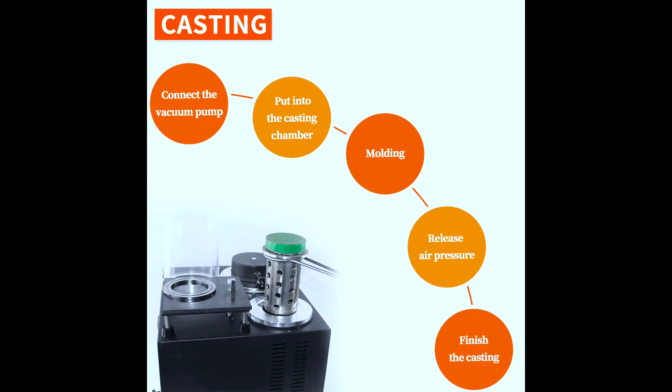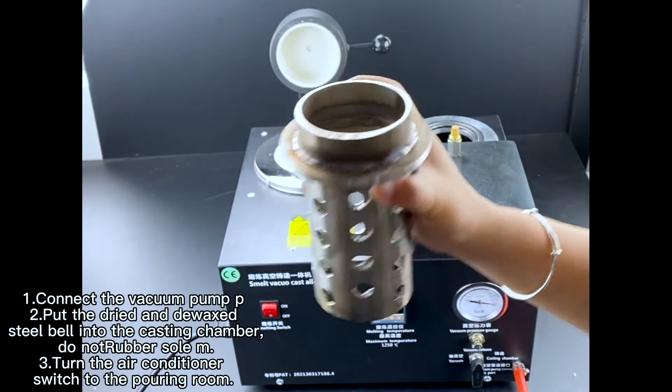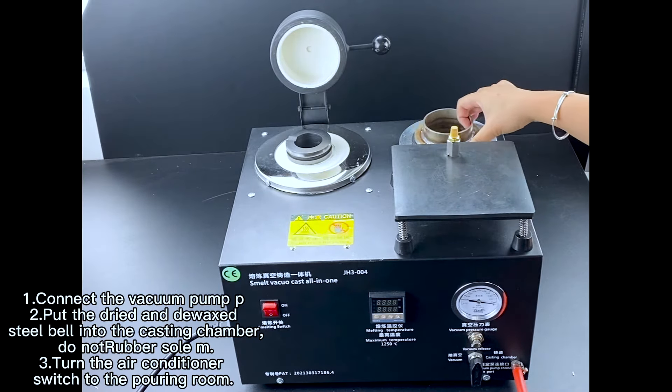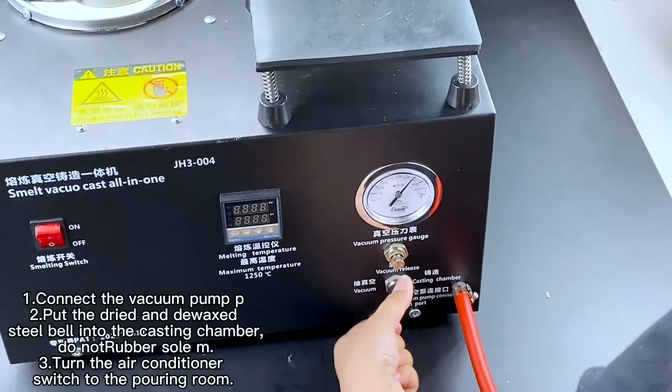Casting: 1. Connect the vacuum pump. 2. Put the dried and de-waxed steel barrel into the casting chamber. 3. Turn the air conditioner switch to the pouring room.